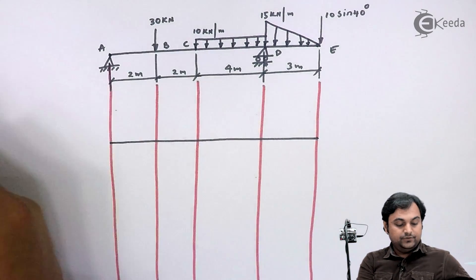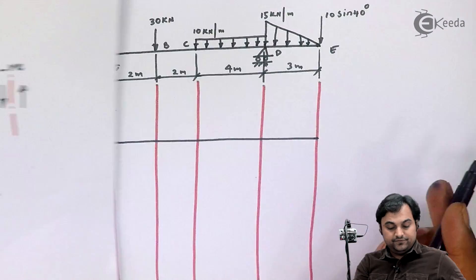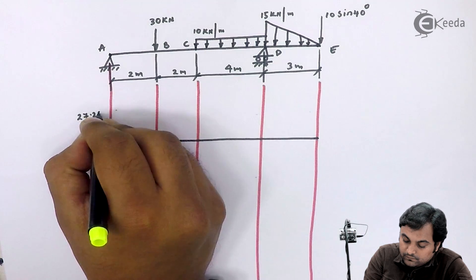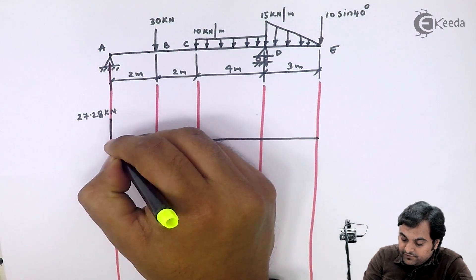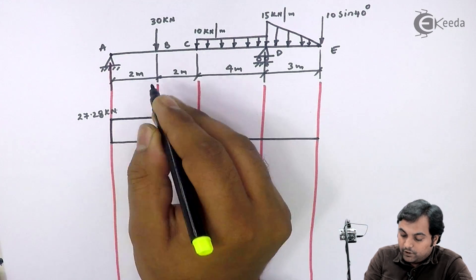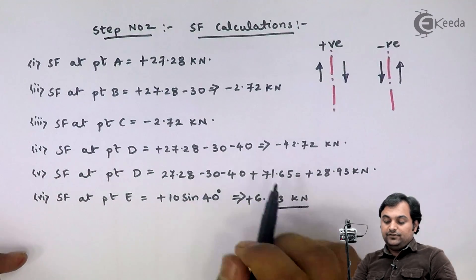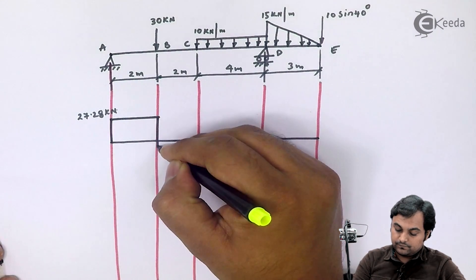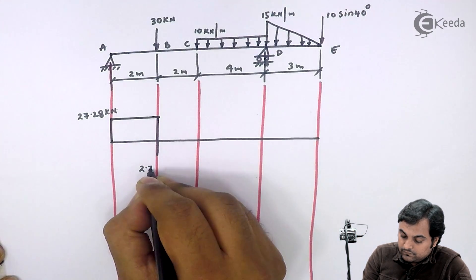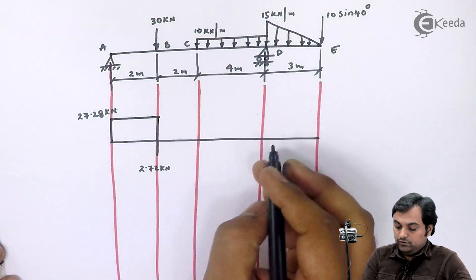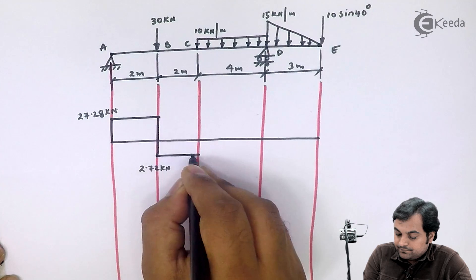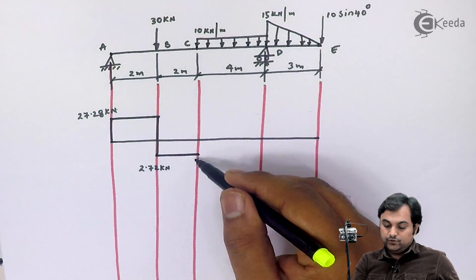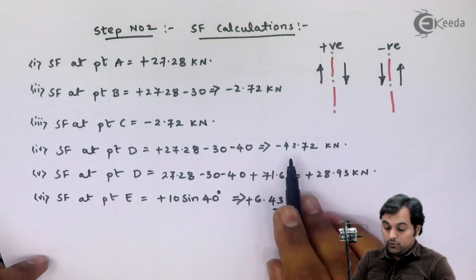I am getting shear force at A as twenty-seven point two-eight, positive. This value will remain constant between A to B. Now at B, the value of shear force is minus two point seven-two kilonewton, so downward. Between B to C there is no load, so again shear force will remain constant. At C the shear force is minus two point seven-two, which is negative.